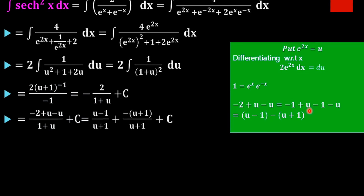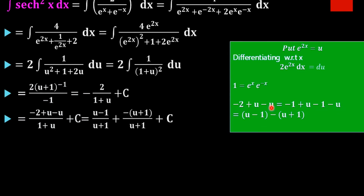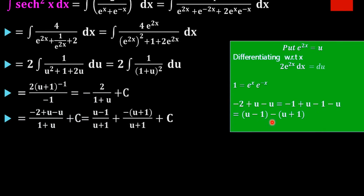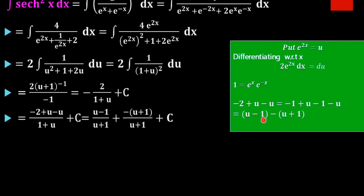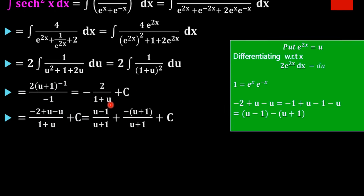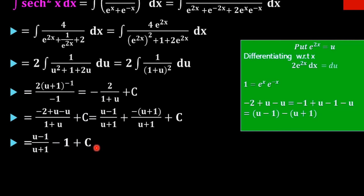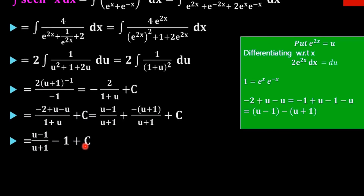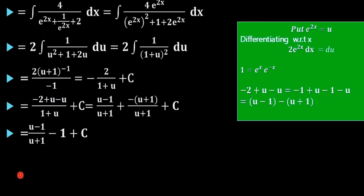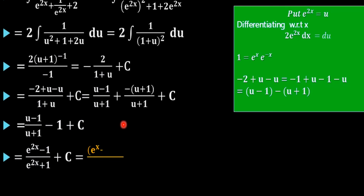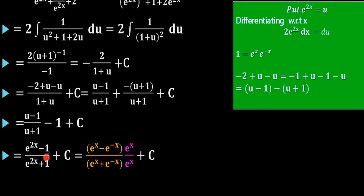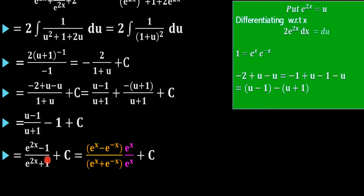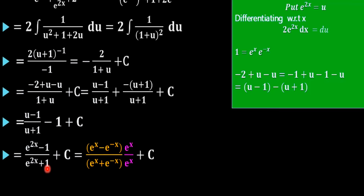So we can rewrite the numerator to get (u - 1)/(u + 1), and the -1 becomes part of the constant. In the next step, substitute u = e^(2x): we get (e^(2x) - 1)/(e^(2x) + 1). Now taking e^x outside numerator and denominator: numerator gives e^x · (e^x - e^(-x)), denominator gives e^x · (e^x + e^(-x)).